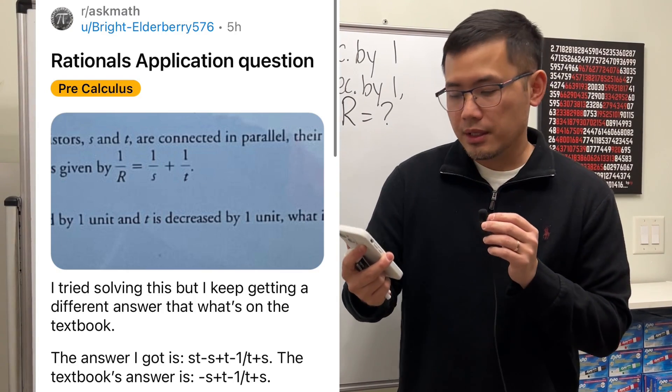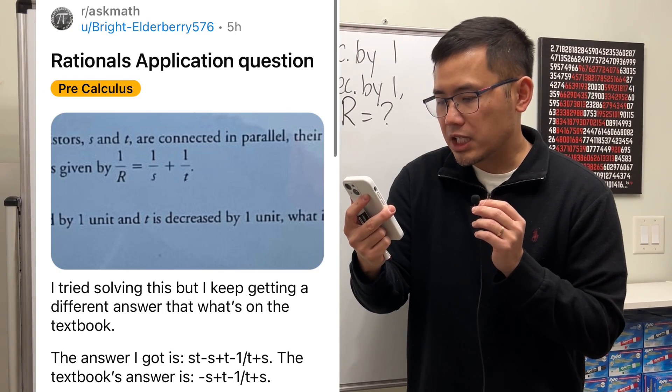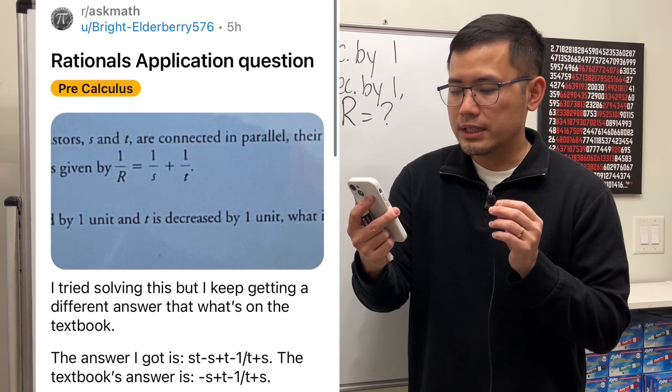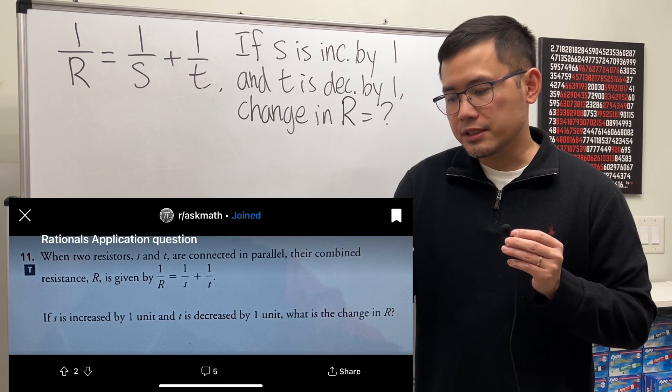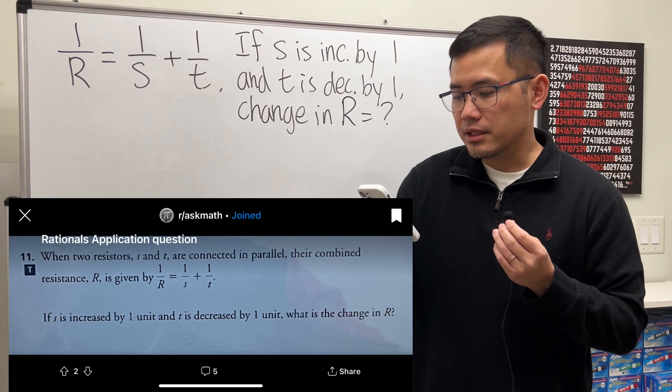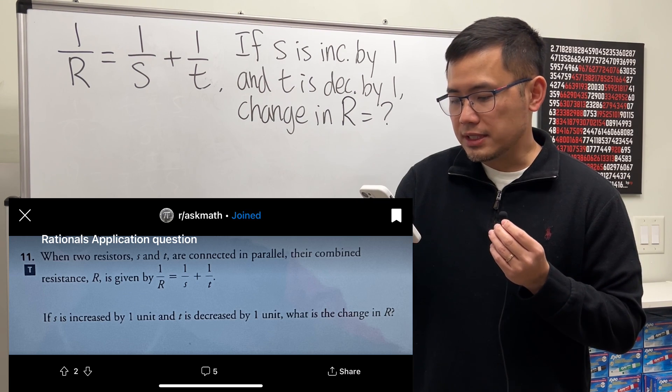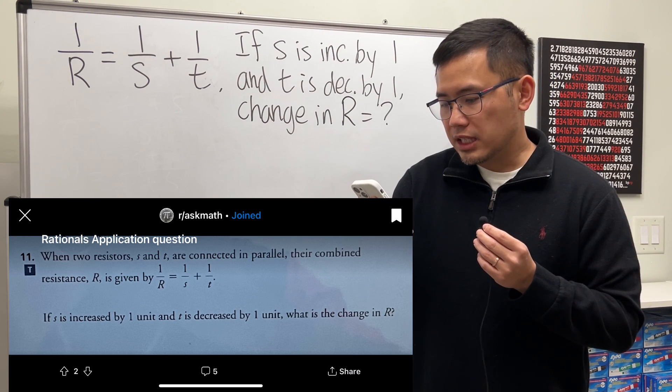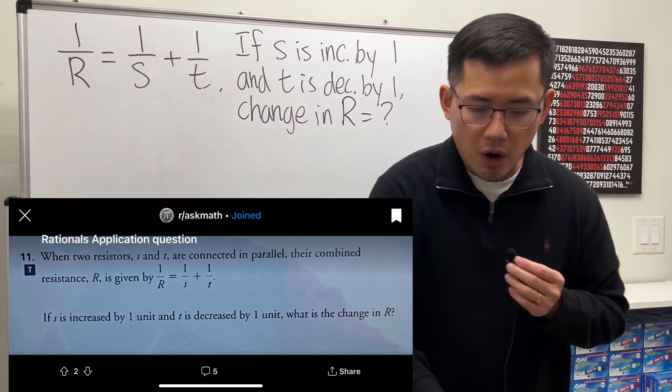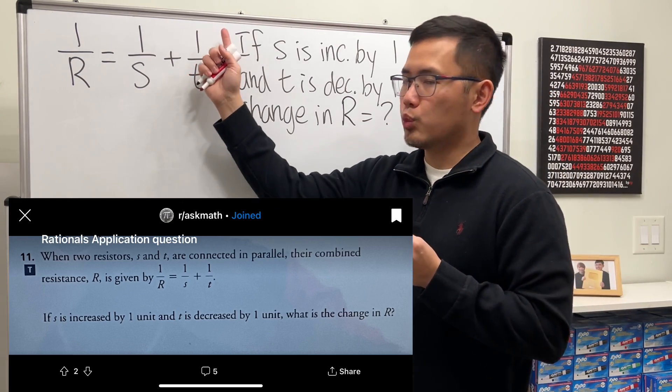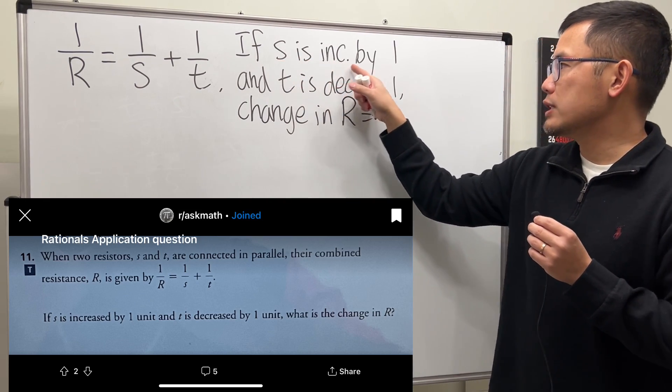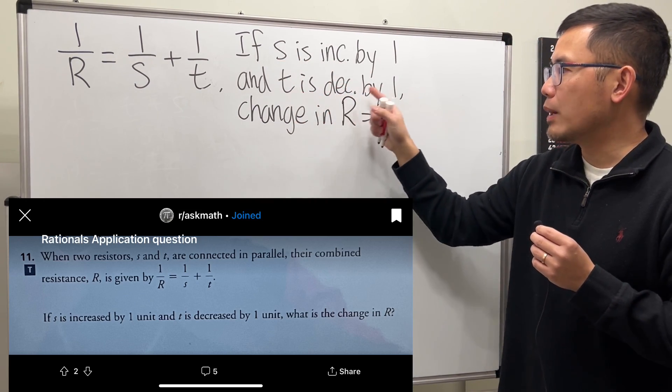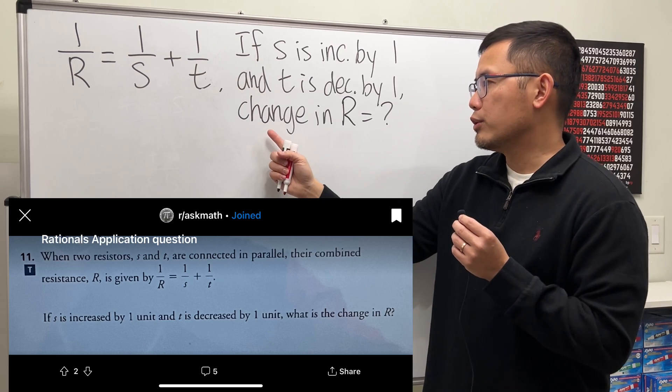This is a rational application question. I tried solving it but kept getting a different answer than what's in the textbook. The question says when we have two resistors S and T connected in parallel, their combined resistance capital R is given by the equation 1 over R equals 1 over S plus 1 over T.